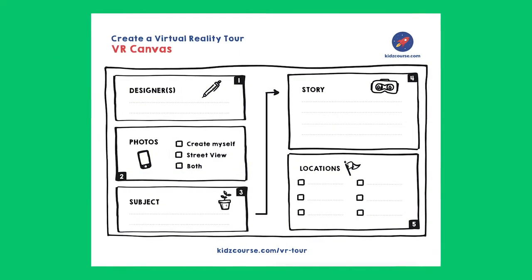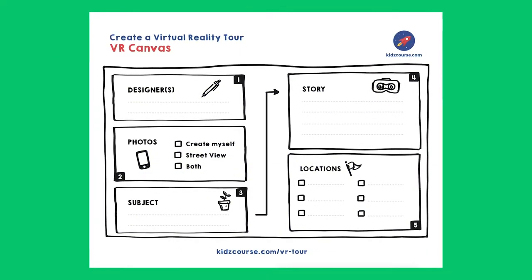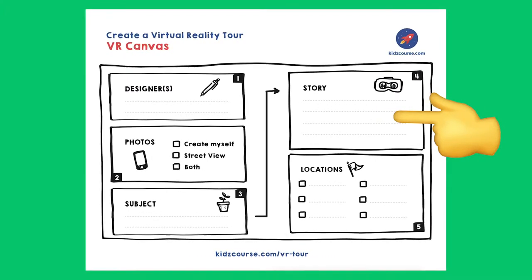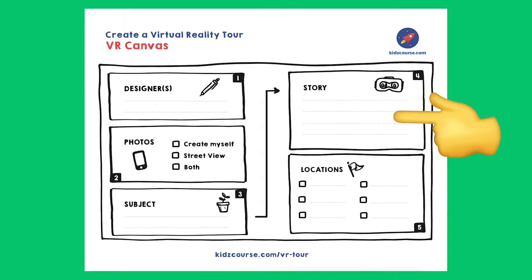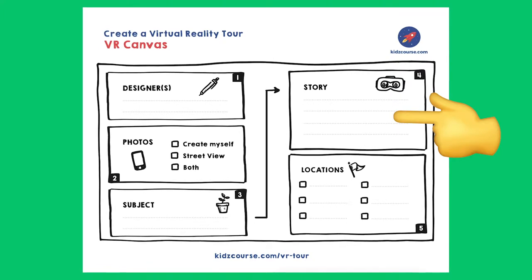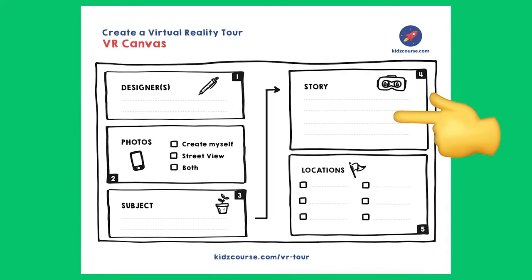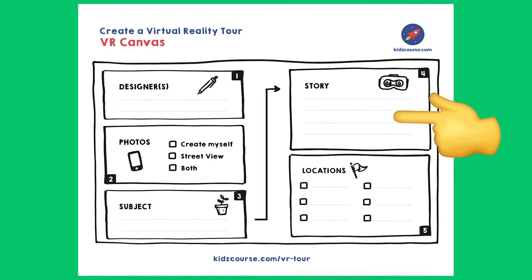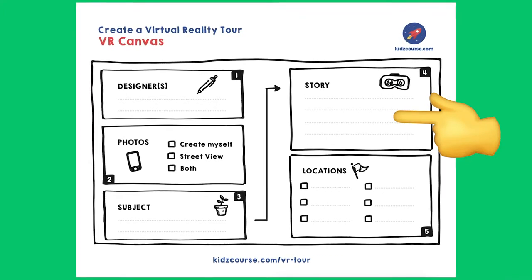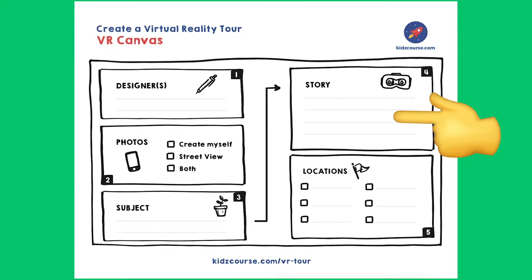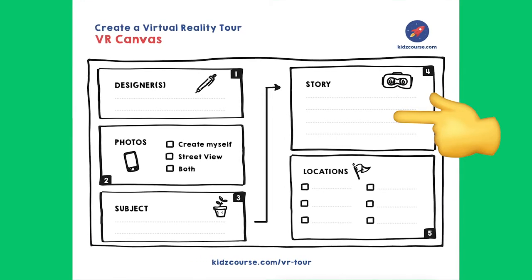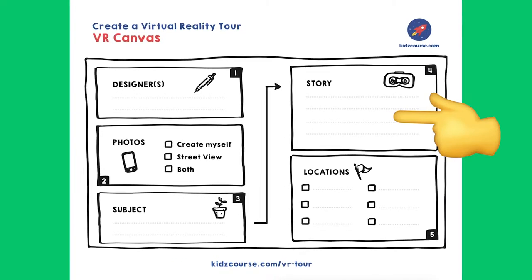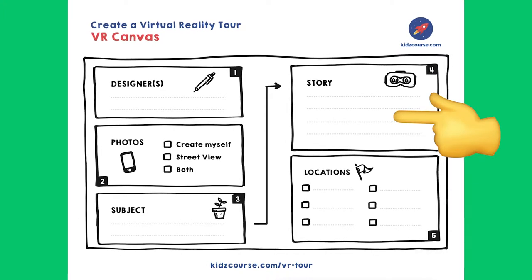Now we're going to take care of the right-hand side of the canvas. Box four: what is the story you are going to tell? Write down in one or two sentences what you want to show the person who is going to take your virtual tour. Say that you have chosen 'my city' — then you can write down: 'I am going to take a virtual walk to show the viewer how beautiful my city is and what my favorite places are.'